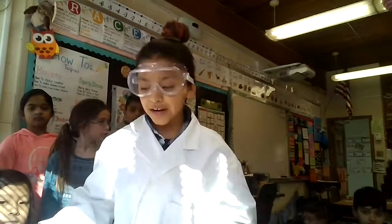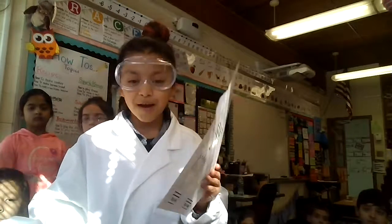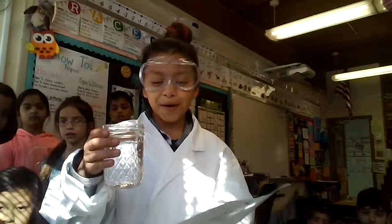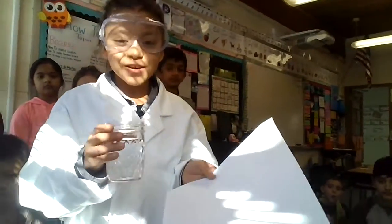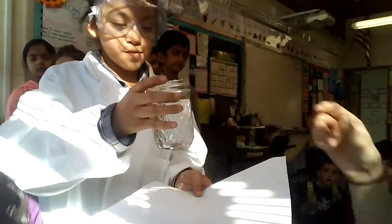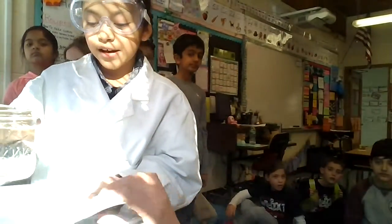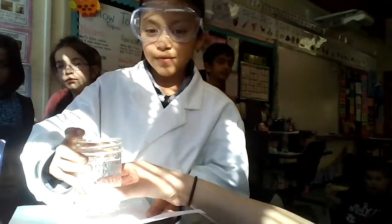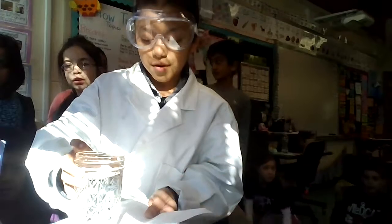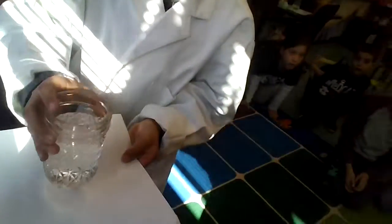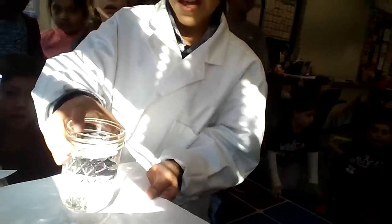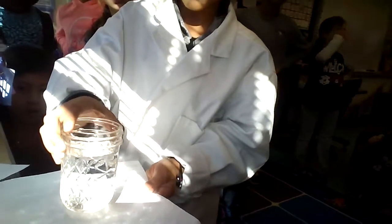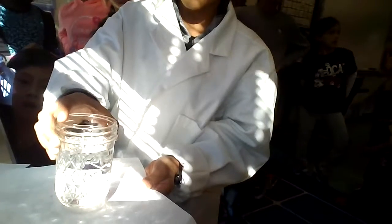You're going to need a piece of white paper and a jar with water. Then you're going to catch the light and put it on a piece of white paper, and you have to wait until the light, the sun, reflects.